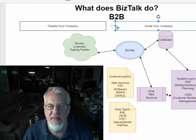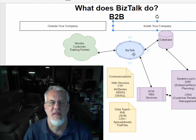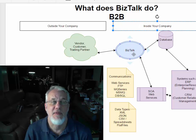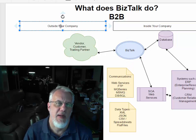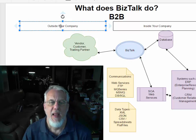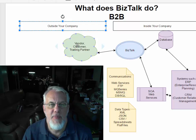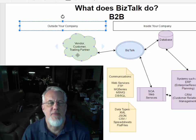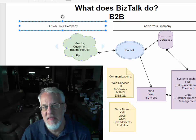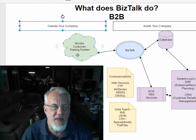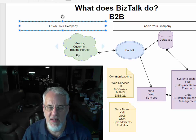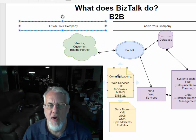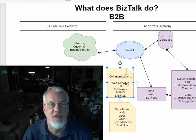On B2B, you're talking about one business communicating with another. Basically, everything on the right side of this diagram over here is your company, who you represent. And then over here is everybody else outside your company. You have different people you have to deal with — vendors, customers, and trading partners. You need to send and receive data to and from these companies.